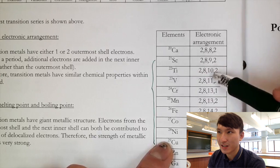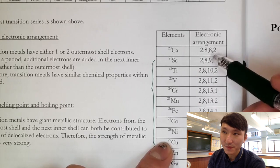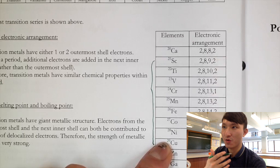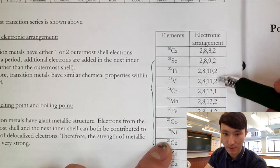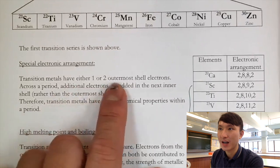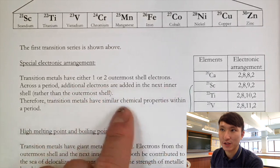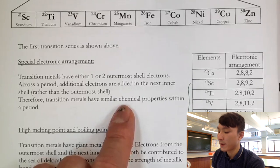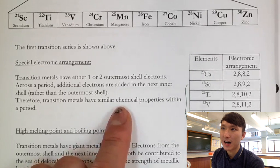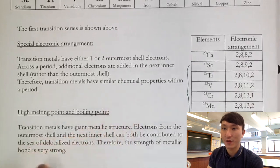From scandium onwards, additional electrons are added to the third shell rather than the fourth (outermost) shell. Because additional electrons do not go to the outermost shell, transition metals have very similar chemical properties. In summary: transition metals have either one or two outermost shell electrons, and electrons are added to the inner shell rather than the outer shell. The full explanation is at university level.